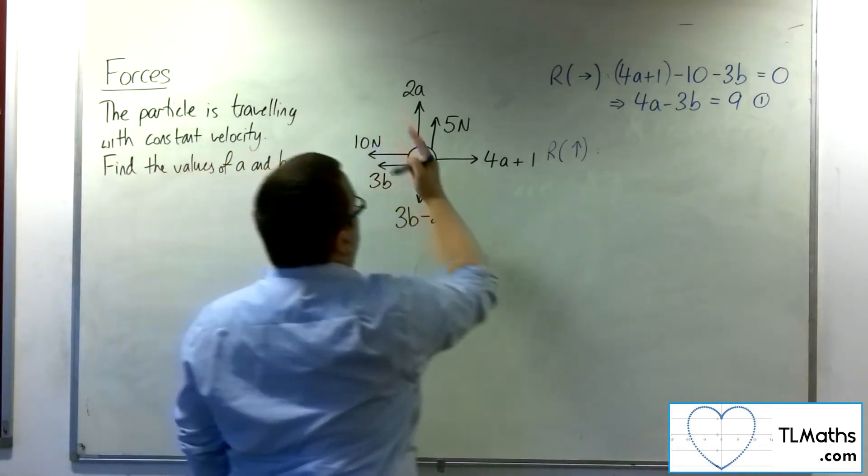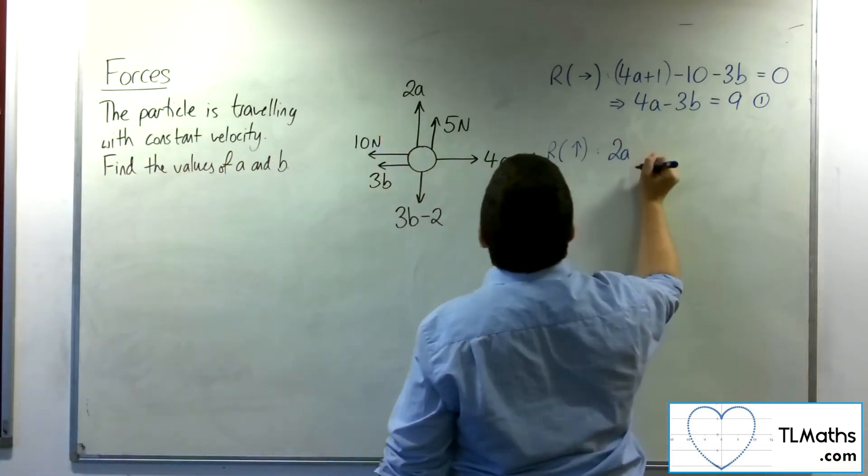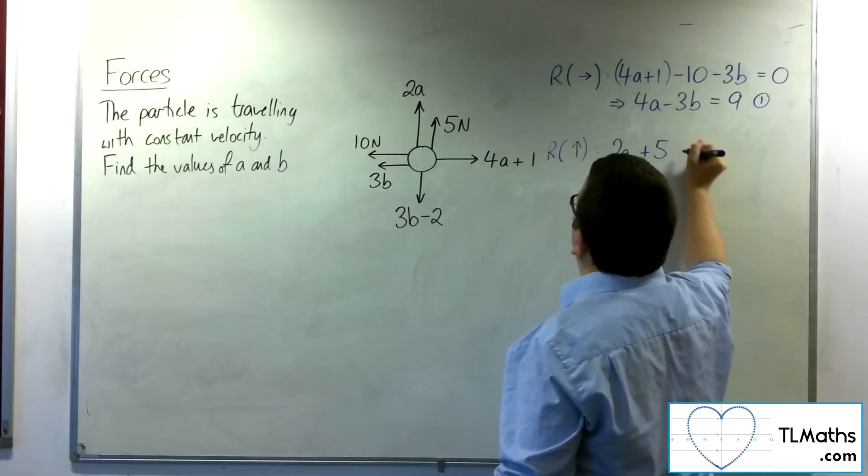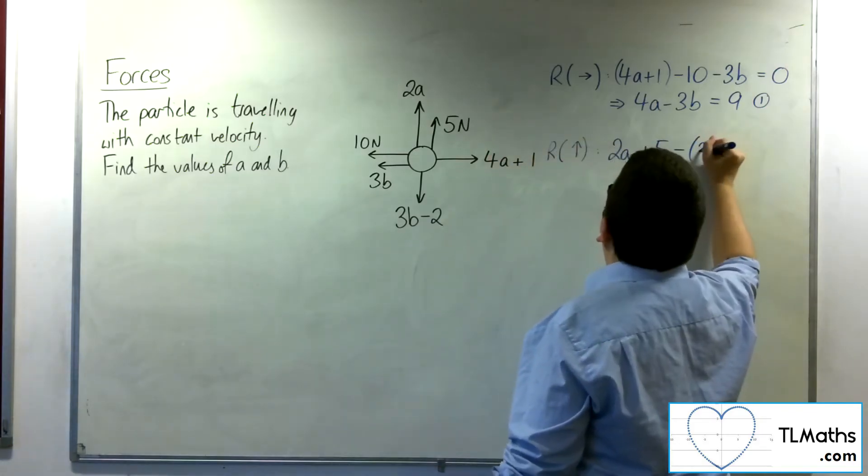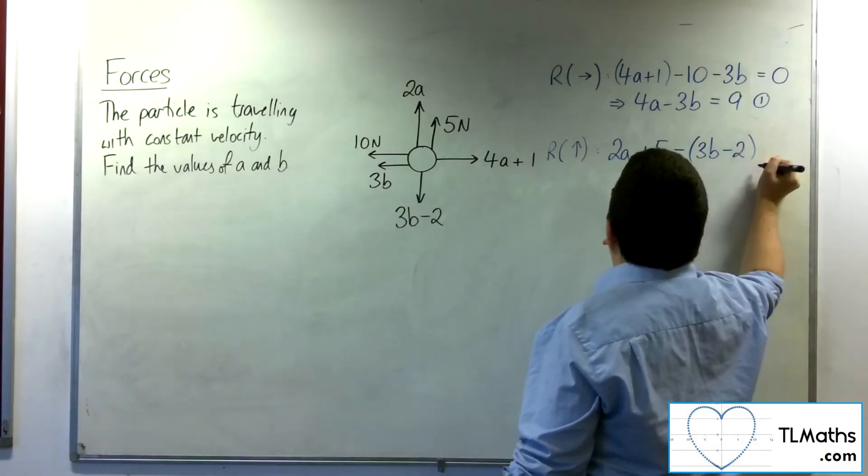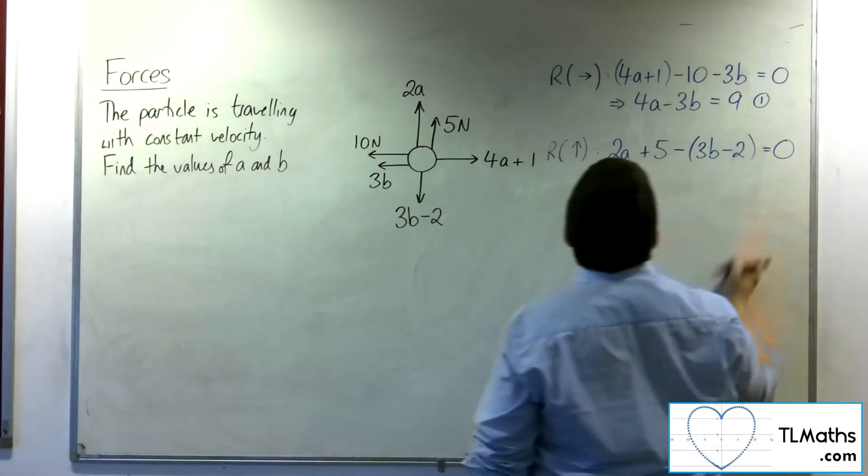I've got the 2A working upwards. I've got the 5 newtons working upwards. I've got 3B minus 2 working against me. And that's got to be equal to zero.